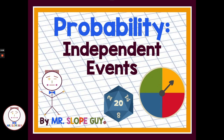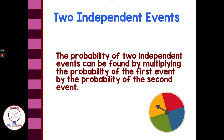Hello. In today's math lesson, we're going to look at probability of independent events. We'll go through some examples and talk about probability and statistics. The probability of two independent events can be found by multiplying the probability of the first event by the probability of the second event.